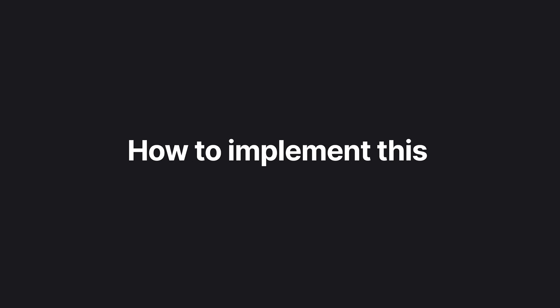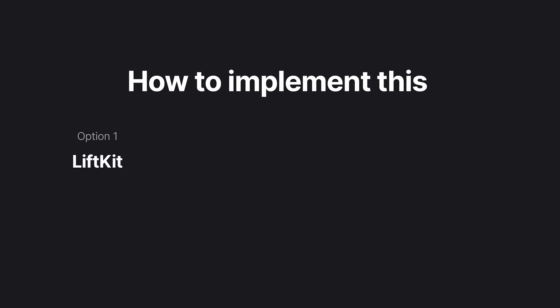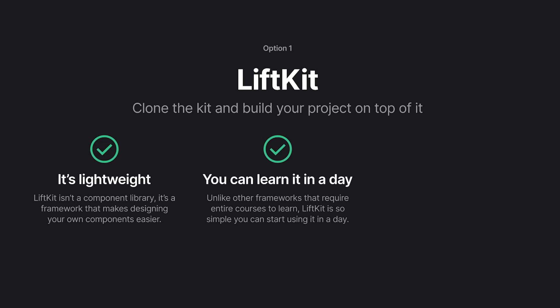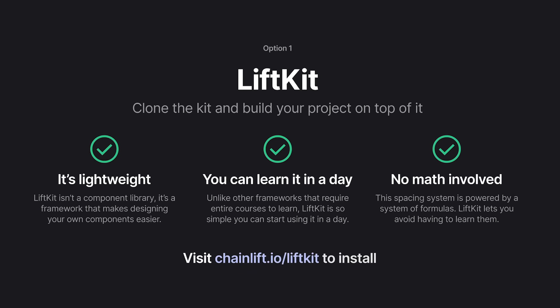Here's how you can actually implement this — three ways. Option one is to just use Lift Kit. It's a clonable Webflow project that's free and super lightweight. It's not a component library; it's a framework that establishes guardrails. You can learn it in about a day. It's designed to have an incredibly gentle learning curve with no math involved. Visit chainlift.io/lift-kit to install it.